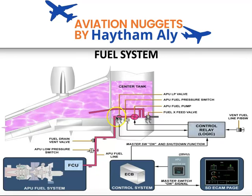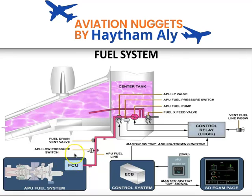This is the line that feeds the APU. By the way, this line is shrouded — in case of any fuel leak, the leaked fuel will go outside the aircraft from the drain mast. In the APU compartment, we have the fuel control unit, and on the fuel control unit we have two more components: the APU low pressure switch and the fuel drain vent valve.